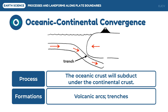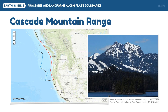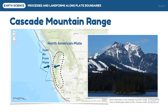The subduction zone trench is another formation of this process. An example of this plate boundary is the Cascade Mountain Range. This mountain range, which stretches from Washington to Oregon and California, is a product of the subduction of the oceanic Juan de Fuca Plate under the continental North American Plate. This mountain range has non-volcanic mountains such as the North Cascades and volcanic mountains such as the High Cascades.